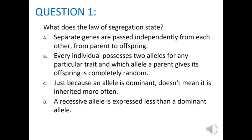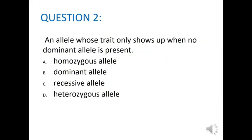Let's end today's lecture by answering a few simple questions. Question 1: What does the Law of Segregation state? A) Separate genes are passed independently from each other from parents to offspring; B) Every individual possesses two alleles for any particular trait and which allele a parent gives its offspring is completely random; C) Just because an allele is dominant does not mean it is inherited more often; or D) A recessive allele is expressed less than a dominant allele. Question 2: An allele whose trait only shows up when no dominant allele is present is: A) homozygous allele, B) dominant allele, C) recessive allele, or D) heterozygous allele.